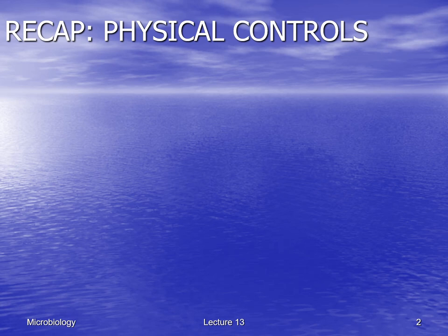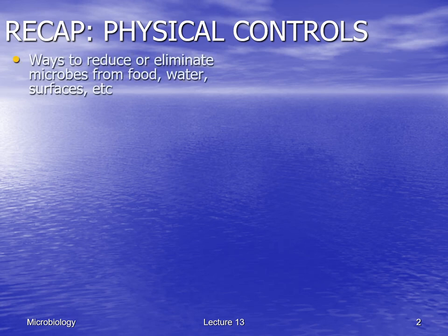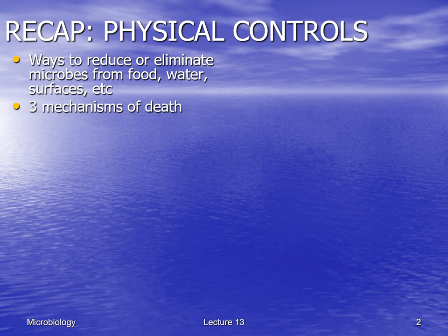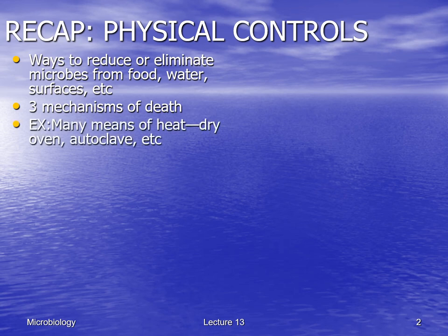Let's get to a little recap on physical controls. Physical controls are ways to reduce or eliminate microbes in food, water, on surfaces, and so on — we're talking about forms of energy, not chemicals. There are basically three mechanisms for killing a microbe, and we went through those, so make sure you know them.